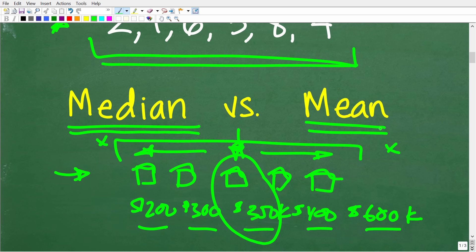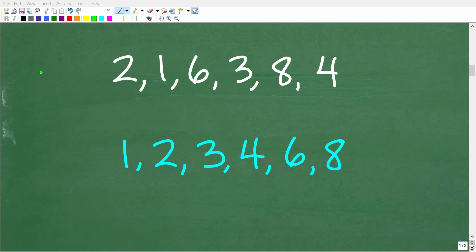Okay, so let's get into exactly how to calculate the median. So as I indicated, to find the median, we need to first make sure that our set of data, our numbers are arranged from least to greatest. So here we have 2, 1, 6, 3, 8, and 4. We need to reshuffle these numbers this way, from least to greatest. So now we have 1, 2, 3, 4, 6, and 8.